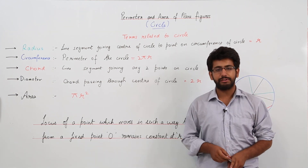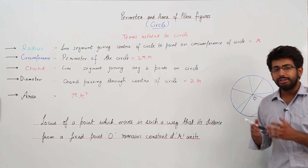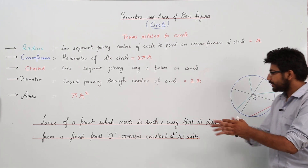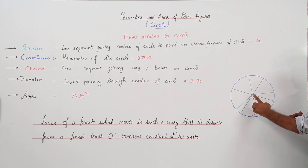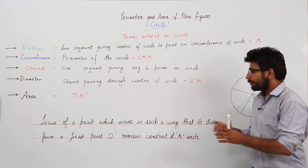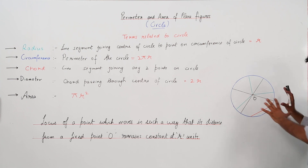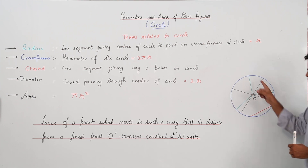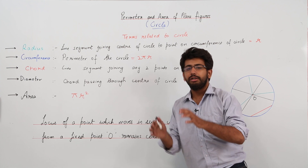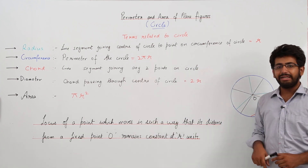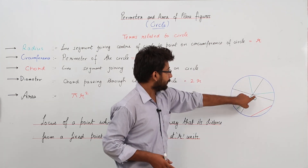What is a circle? The definition of a circle is: it is the locus of a point. Locus means path, so it is the path of a point which moves in such a way that its distance from a fixed point O always remains constant at R units. The blue colored part in this diagram is the locus of a point.